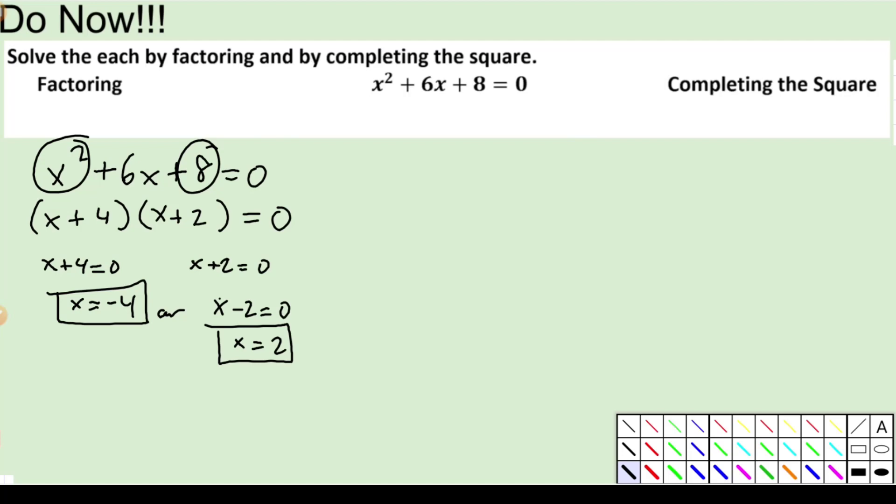We're going to solve the next one by completing the square. So again, I like that method. x squared plus 6x, leave space, move the 8 over, so I'll get negative 8. Now what will that term be?